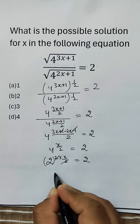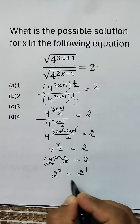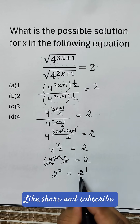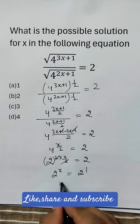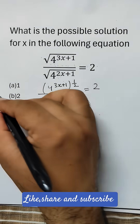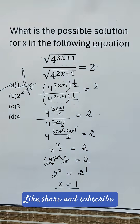This cancels and we are left with 2 power x is equal to 2 power 1. As the base is the same, the exponents will be equal, so x is equal to 1. Therefore, option A is the correct answer.